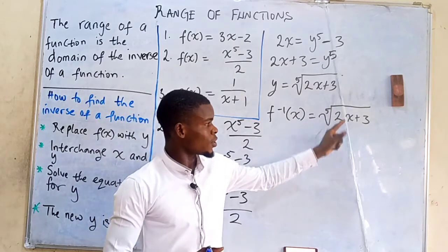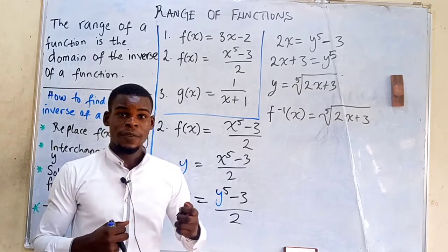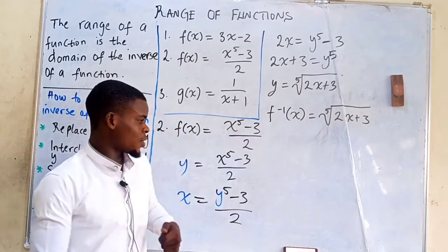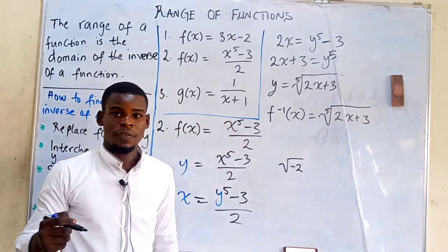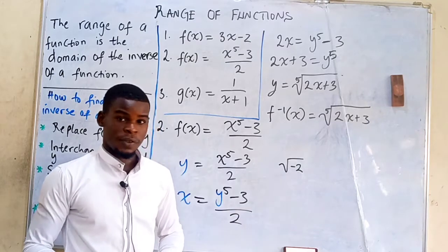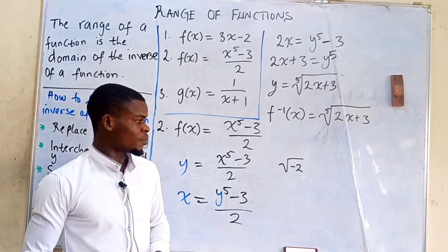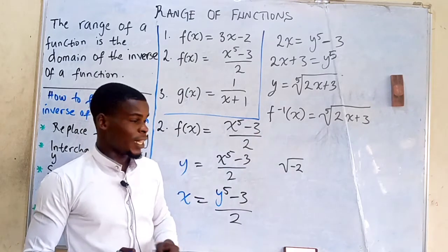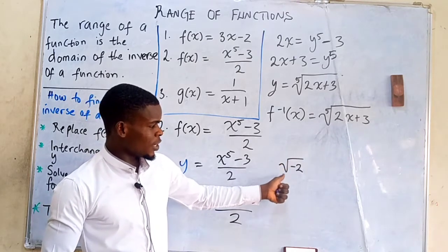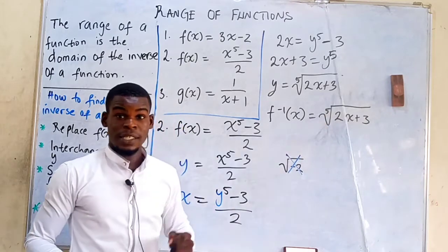This inverse function contains a radical — the fifth root of something. The fifth root is defined for every input, whether negative or non-negative. This is different from a square root: if we try to find the square root of a negative number like -2, there is no real number whose square gives -2, so the square root of -2 is not a real number. Whenever we have an even root, the input cannot be negative.